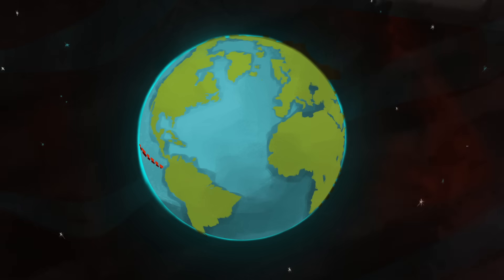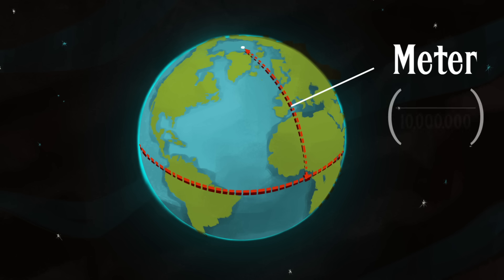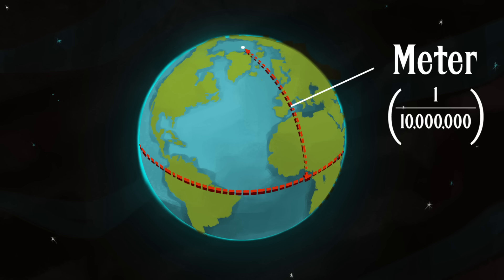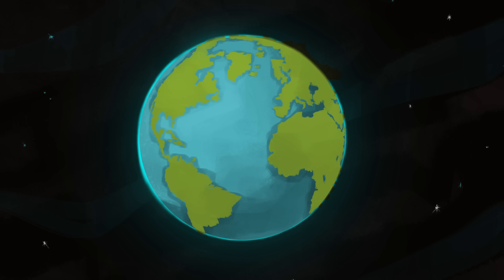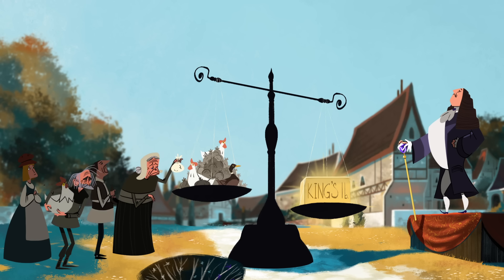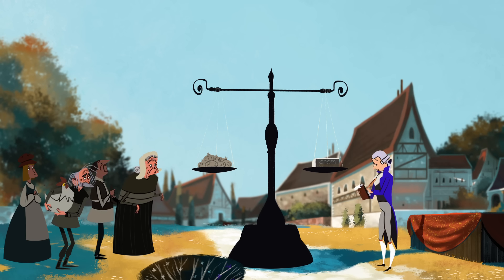For example, the meter — from the Greek word for measure — was defined as one ten-millionth of the distance between the equator and the North Pole. And the new metric system was, in the words of the Marquis de Condorcet, for all people, for all time. Standardizing measurements had political advantages for the revolutionaries as well: nobles could no longer manipulate local units to extract more rent from commoners, while the government could collect taxes more efficiently.